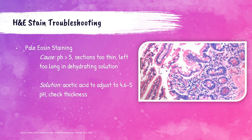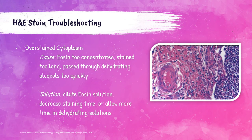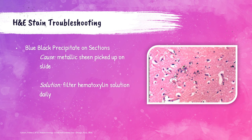Pale eosin staining can be caused by the pH being greater than 5, the section left too long in dehydrating solution, or the tissue section being too thin. If caused by a pH issue, add acetic acid to reach pH 4.6 to 5, and ensure the bluing agent is fully removed before transferring to the eosin stain. Overstained cytoplasm can be attributed to eosin being too concentrated, the tissue stained for too long, or insufficient time in dehydrating alcohols. Solutions include diluting the eosin, decreasing staining time, or allowing more time in dehydrating solutions.